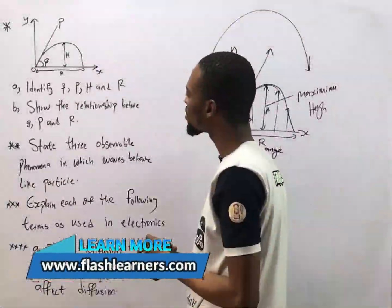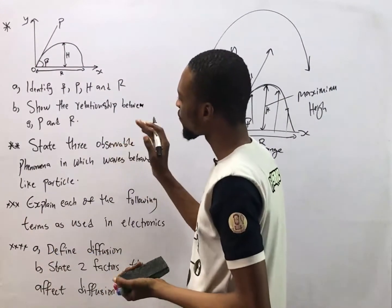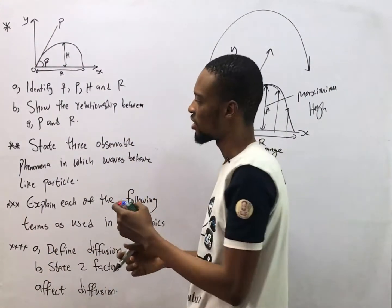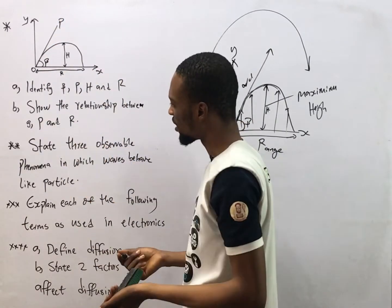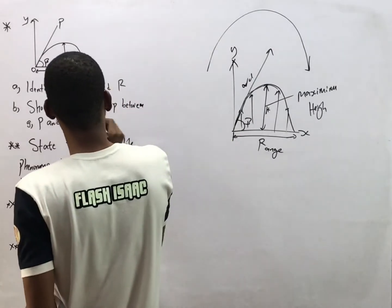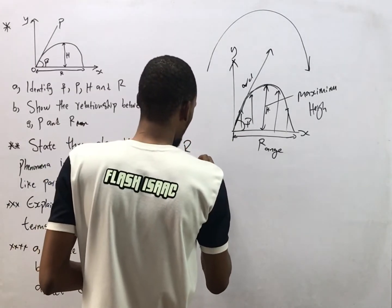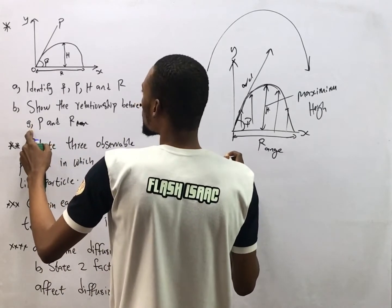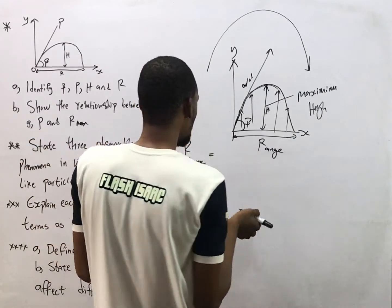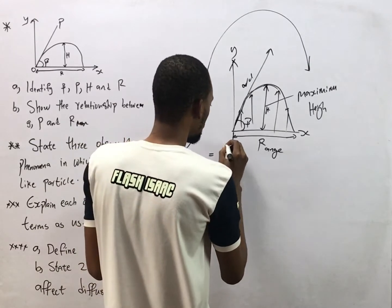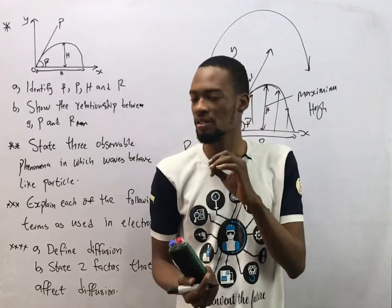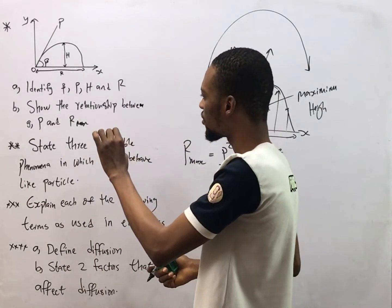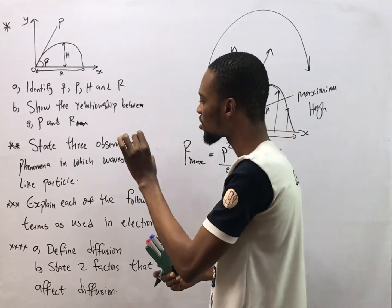Part b says we should show the relationship between g (acceleration due to gravity), p (velocity), and r (range). The relationship is simply that maximum range equals p squared over g. That is the relationship between maximum range, velocity, and acceleration due to gravity.